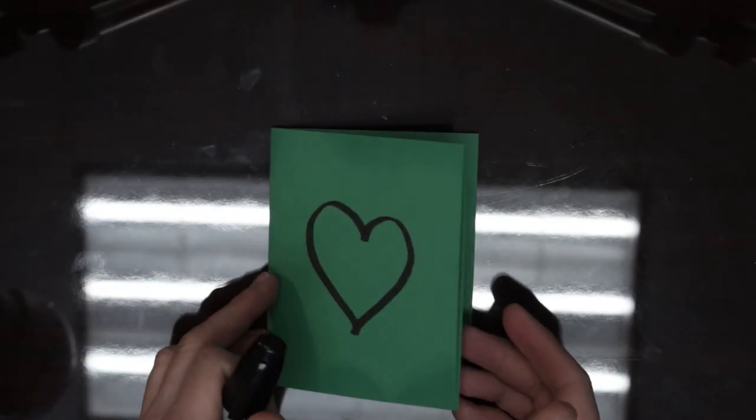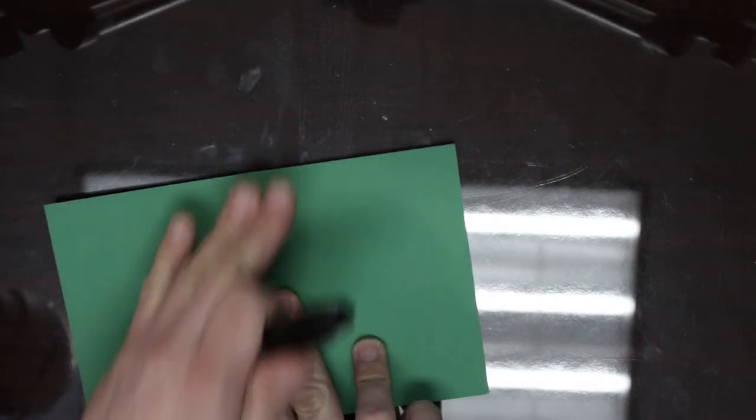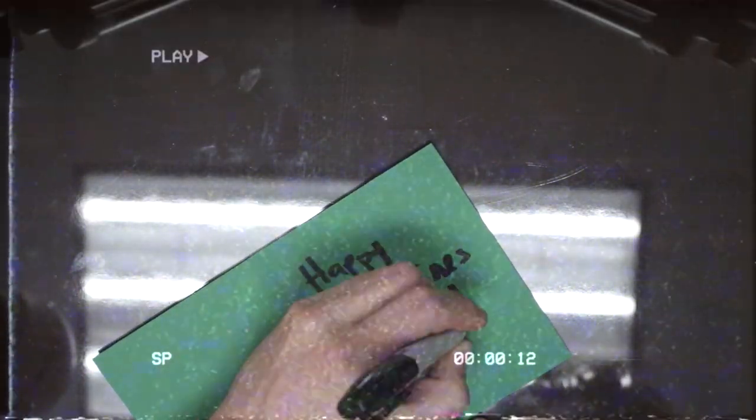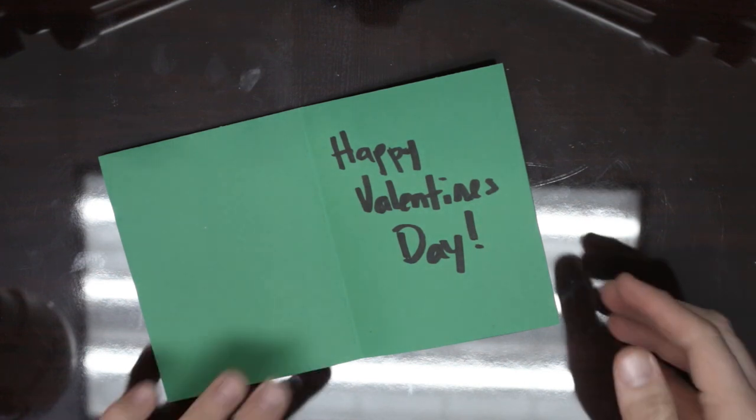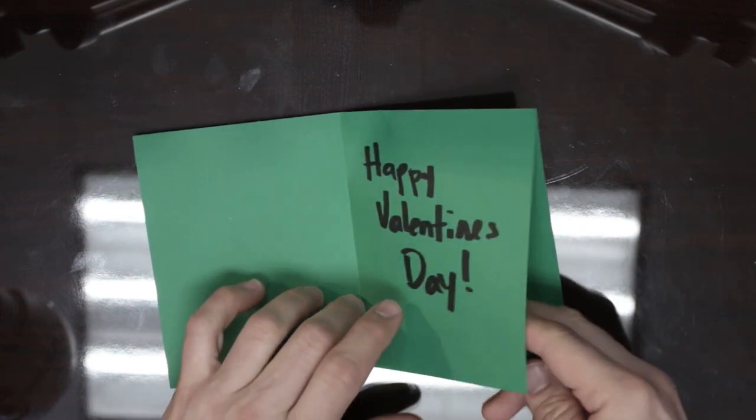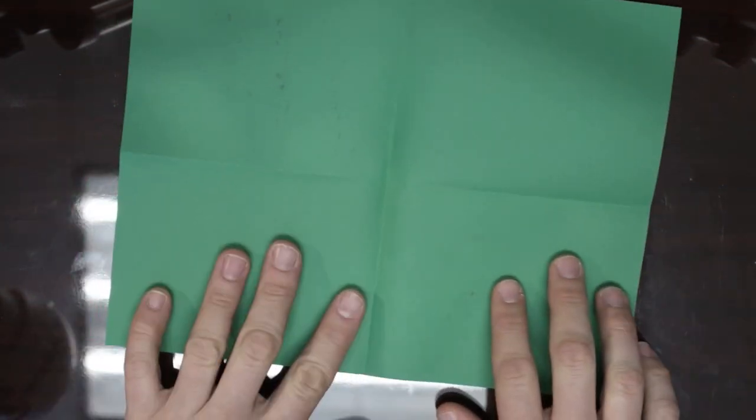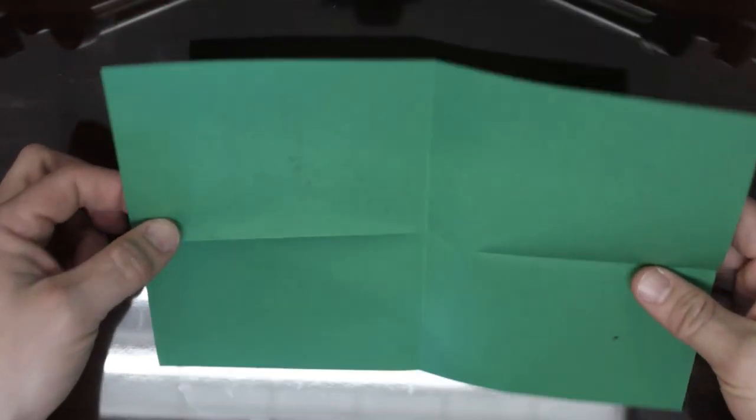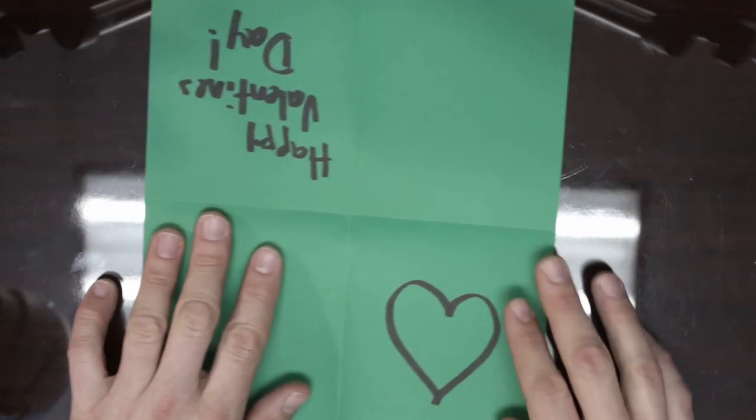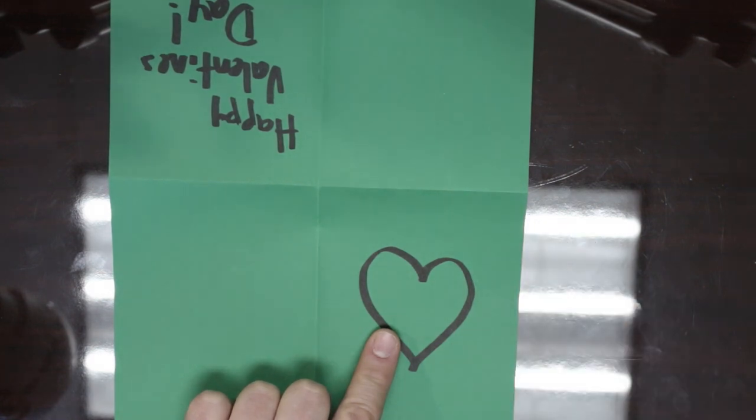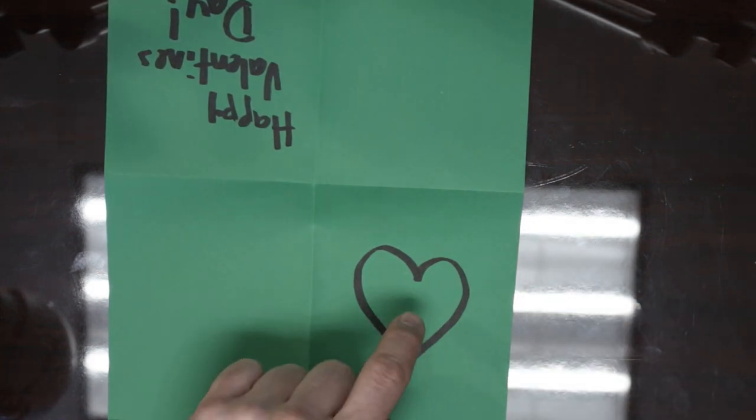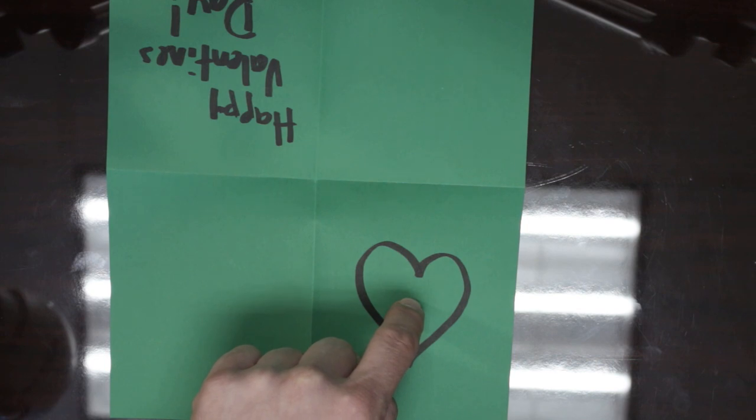Once you've decorated, go ahead and open up and write a message. Now that you have your completed decorated card, it's time to add our circuit. Let's unfold our page. Let's turn it over so we can see the artwork. This is the front of my card right here. I want the LED to go right in the middle of the heart.